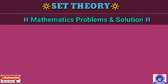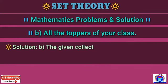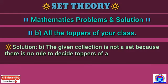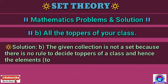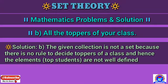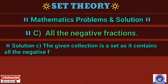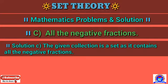Number B — all the toppers of your class: the given collection is not a set because there is no rule to decide the topper of a class, and hence the elements (top students) are not well-defined. Number C — all the negative fractions: the given collection is a set as it contains all the negative fractions, which are well-defined.